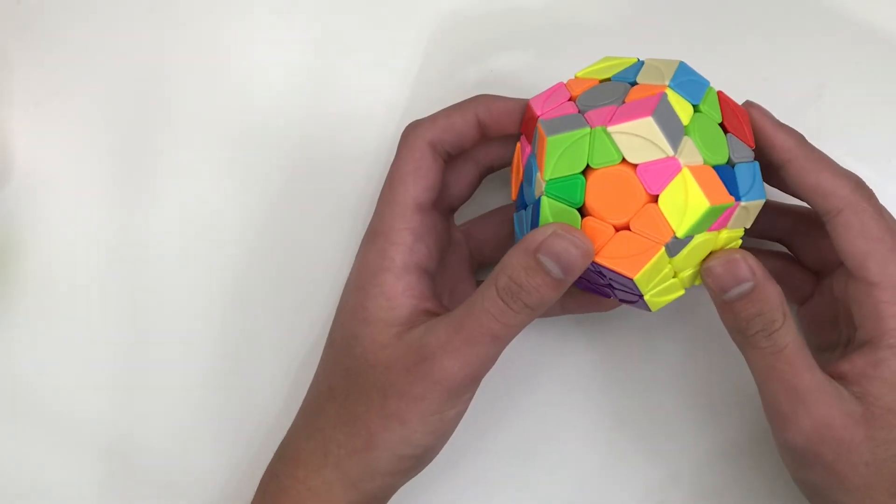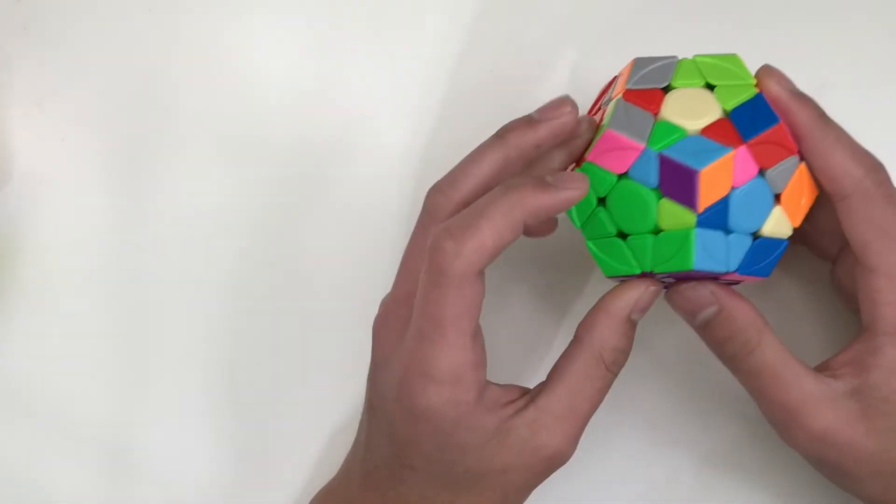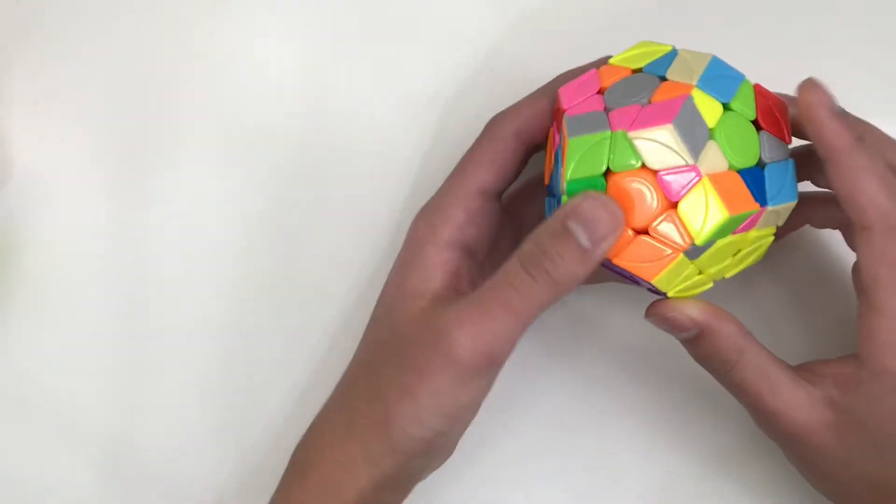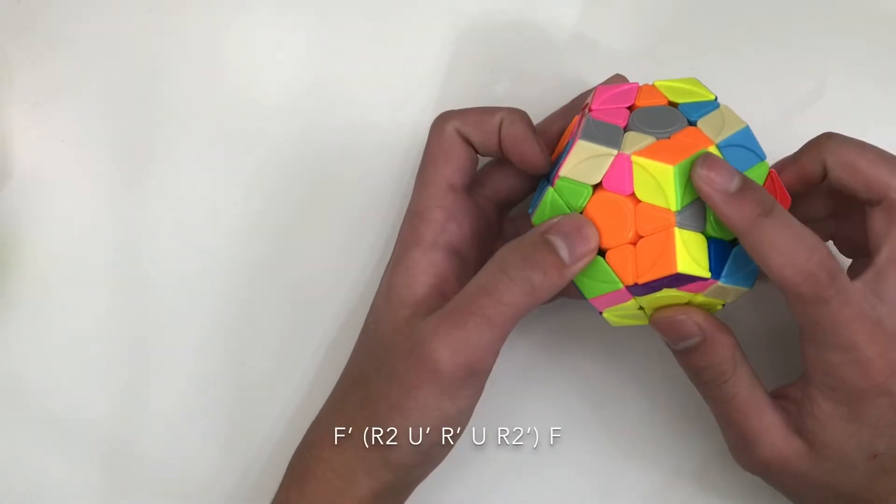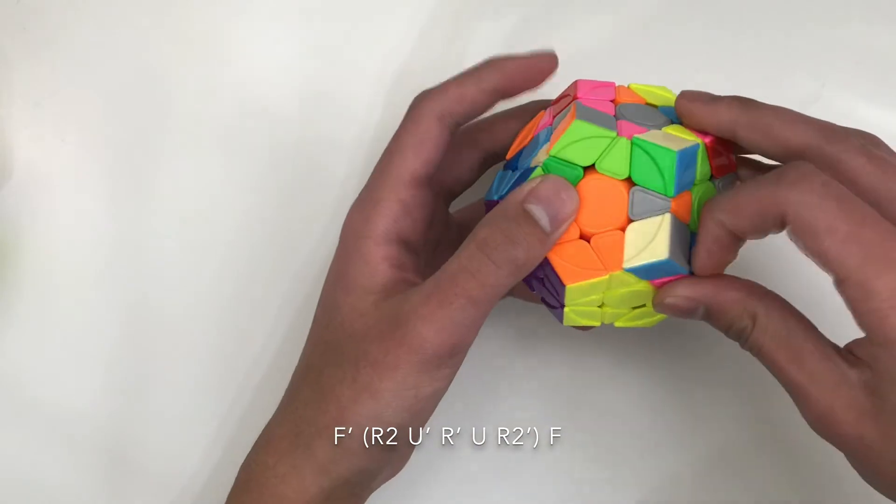If we still wanted to do the same thing with the purple, orange, yellow pair, it would be a bit trickier than if we were to do it with this pair, but we could do an F', and that would set it up to this, and then we can do the same moves, and then finish with that.